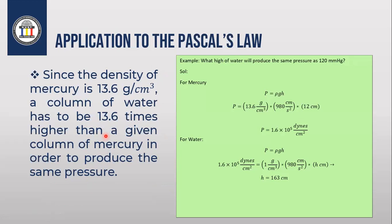Applying Pascal's law, we should know the difference between mercury and water, as we will use both in terms of pressure. For mercury, the height of the column is less than the height of the column for water by a factor of 13.6. Or we can say a column of water has to be higher than a column of mercury by 13.6. I will explain this equation in detail in part two of this lecture.